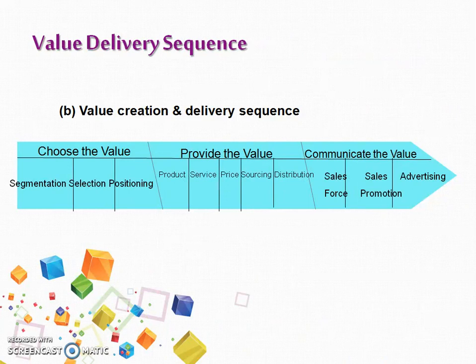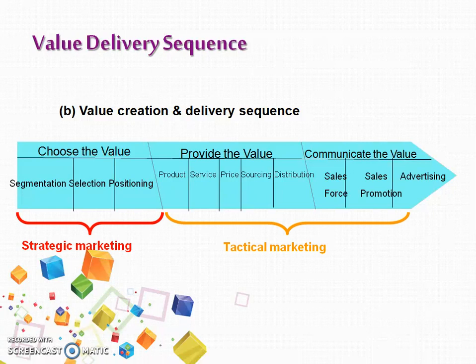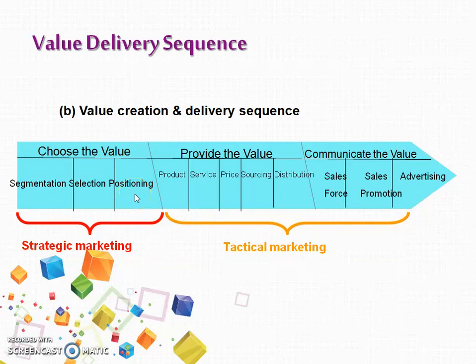In that case, we have to go for the value creation and delivery sequence. It contains two types of planning: strategic planning and tactical planning. Strategic planning includes choosing the value — what kind of value and for which kind of market. This is where the STP strategy comes in: segmentation, targeting, and finally deciding about the positioning strategy.